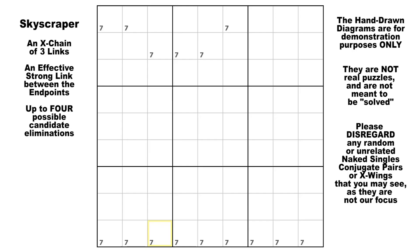Before we begin, I'd like to remind everyone that these hand-drawn diagrams are not real puzzles. They are not meant to be solved or critically analyzed. They are for demonstration purposes only, so please try to focus only on the particular point I am trying to make. I am trusting that everyone has watched video number three on strong links and weak links, and video number four on basic AICs, and videos 14 and 15 on turbofish and two-string kites. If you have watched all those tutorials, then skyscrapers should be a piece of cake for you.